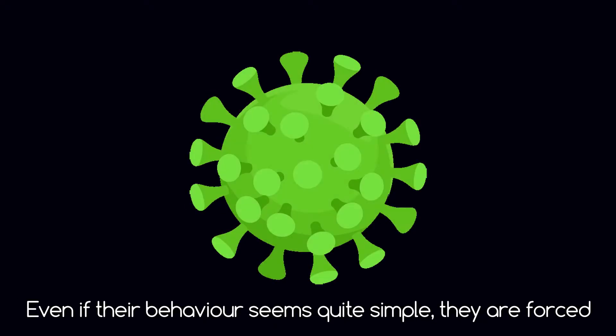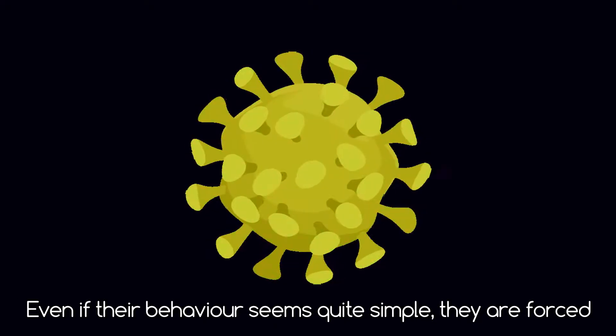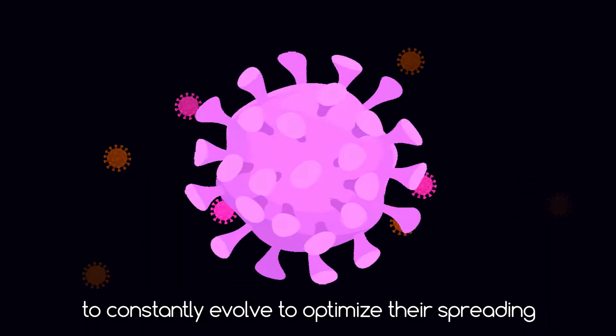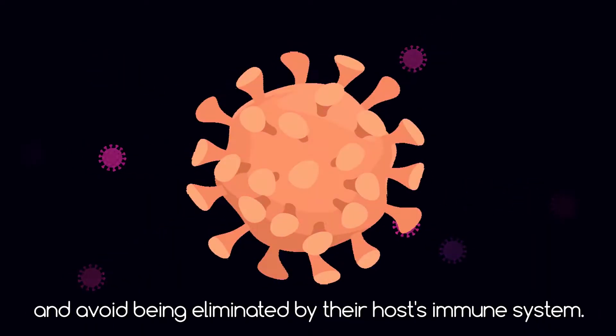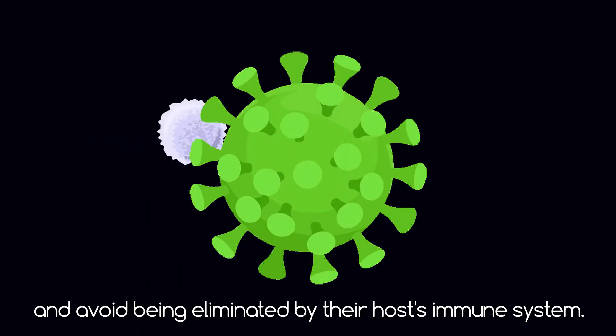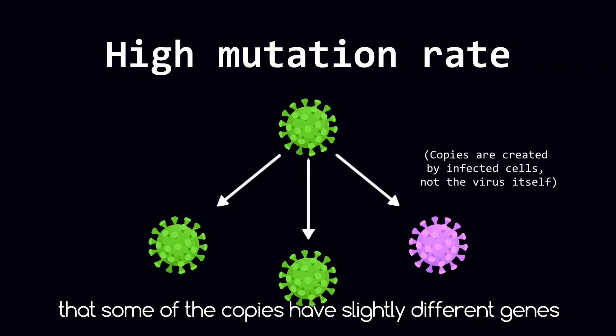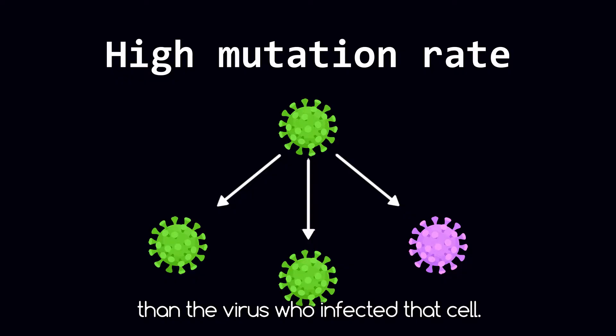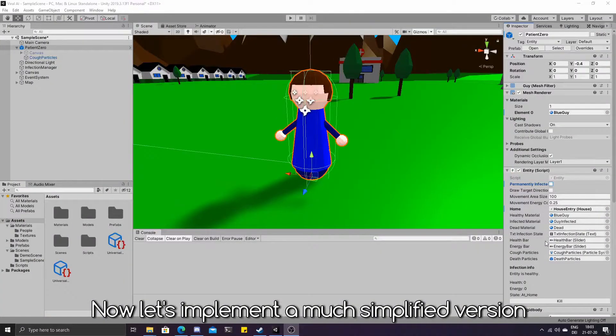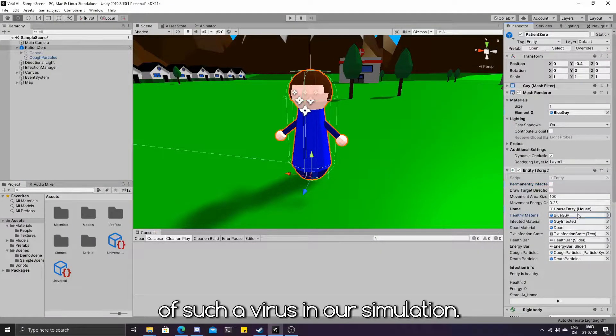Even if their behavior seems quite simple, they are forced to constantly evolve to optimize their spreading and avoid being eliminated by the host's immune system. For this reason, viruses tend to have a very high mutation rate, meaning that there is a relatively high chance that some of their copies have slightly different genes than the virus who infected that cell. Now let's implement a much simplified version of such a virus in our simulation.